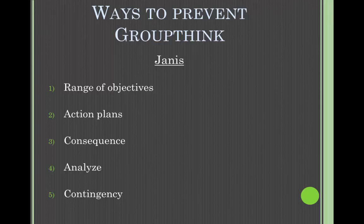That was an example of groupthink. Now we're going to talk about ways to prevent groupthink. Janis suggested that the best way is to engage in vigilant decision-making. First, look at the range of objectives the group members wish to achieve. Second, develop and review action plans and alternatives. Third, explore the consequence of each alternative. Fourth, analyze previously rejected action plans when new information emerges. And fifth, have a contingency plan for failed suggestions.